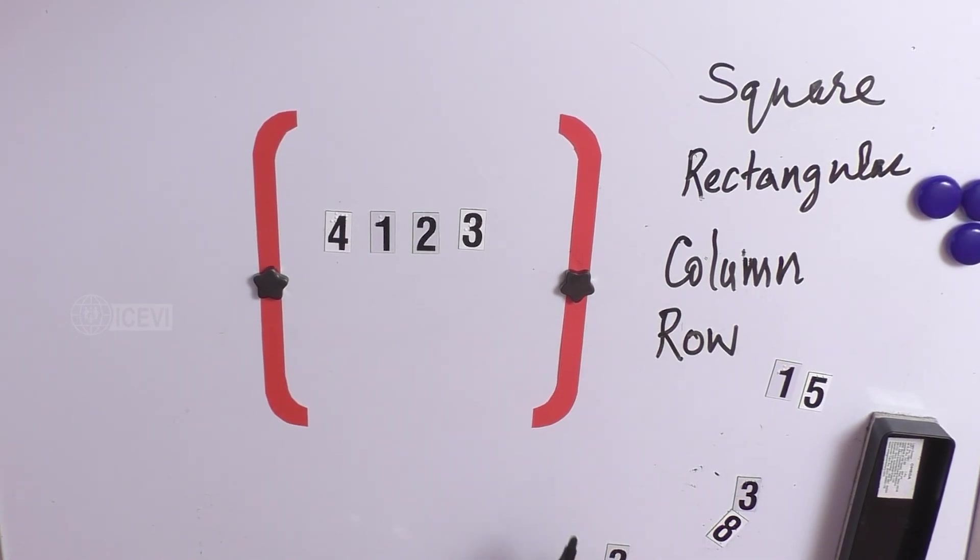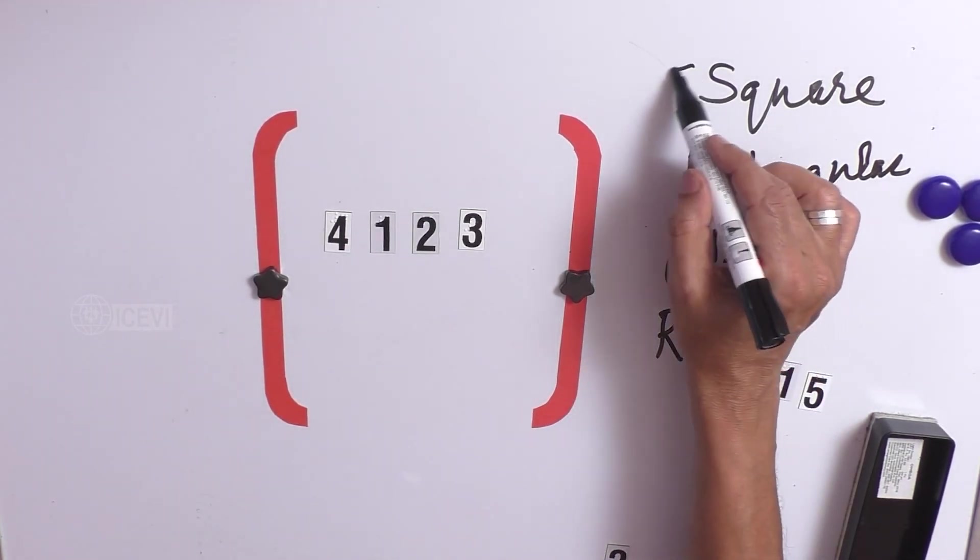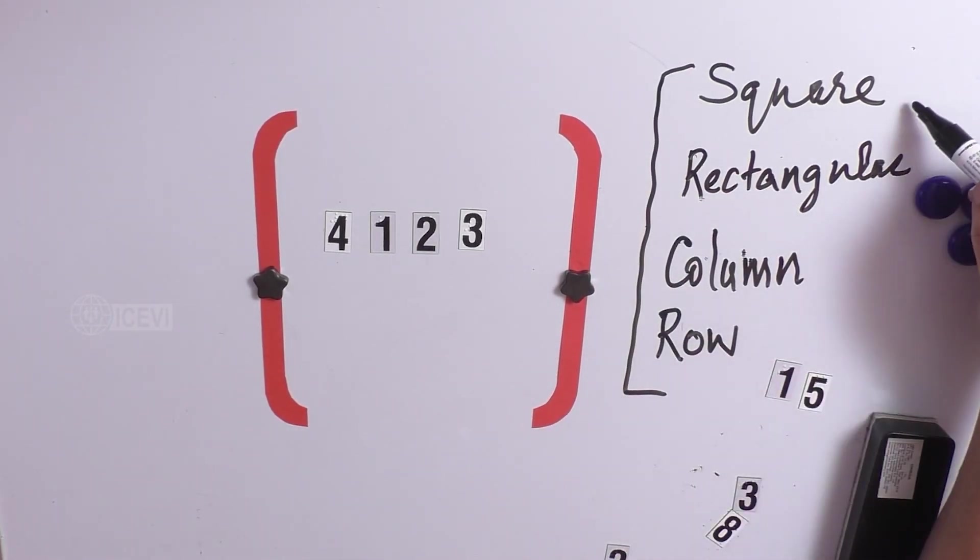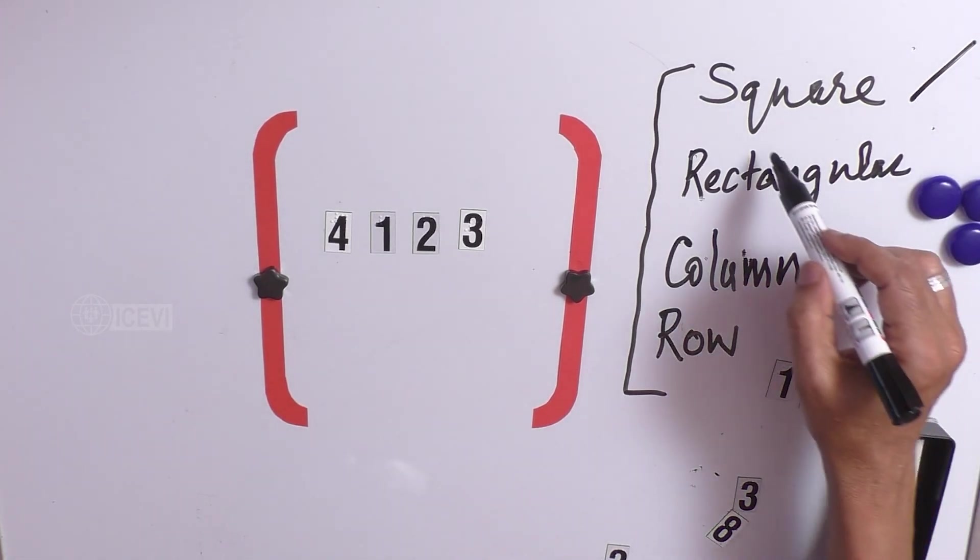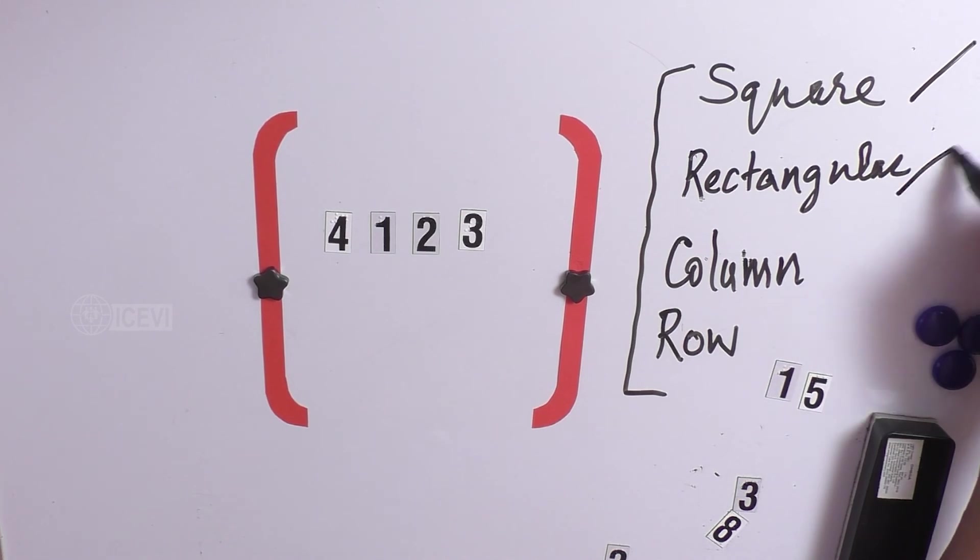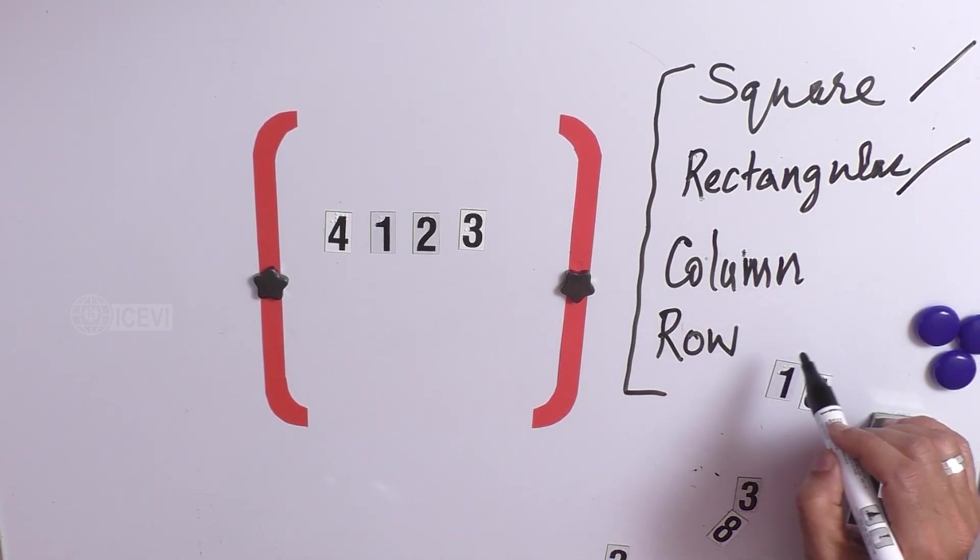So, this way, we distinguish the different types of matrices. One is a square matrix, when the rows and columns are equal. Rectangular matrix, when the rows and columns are not equal, one is greater than the other.